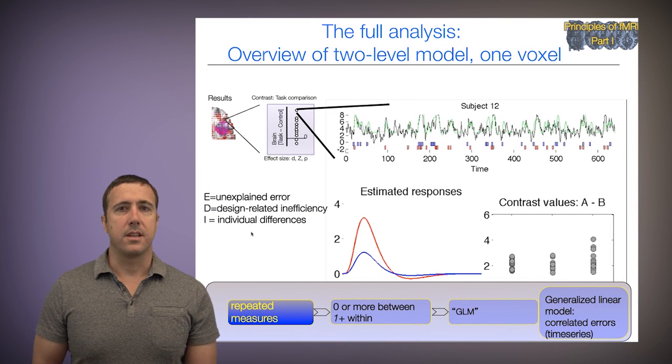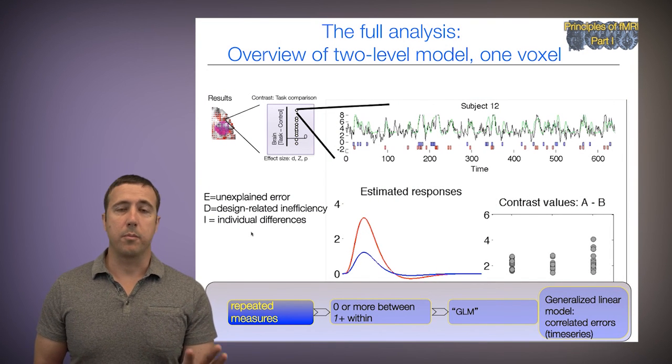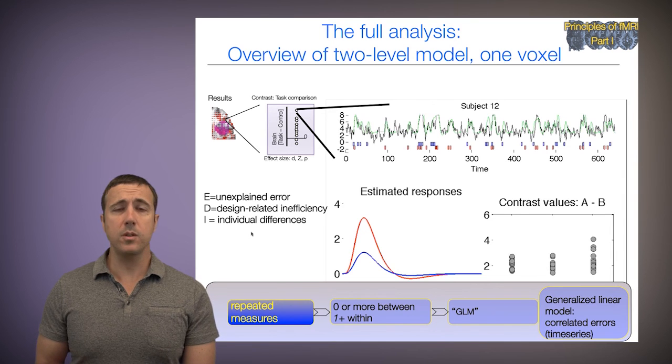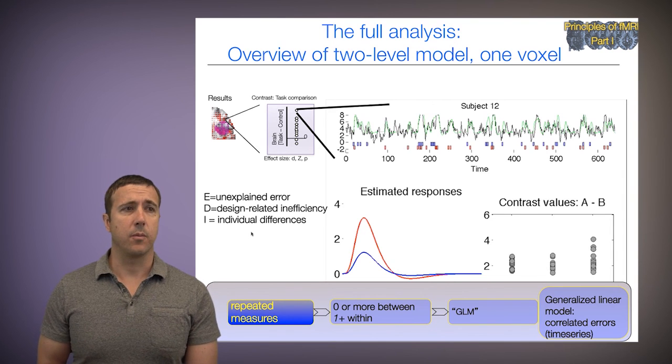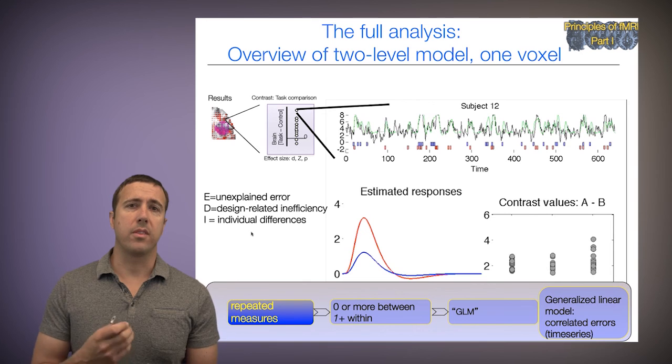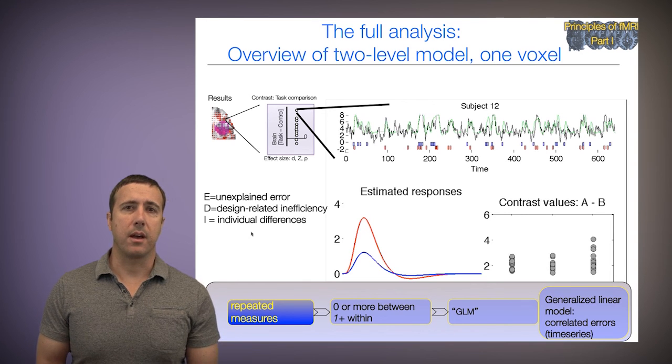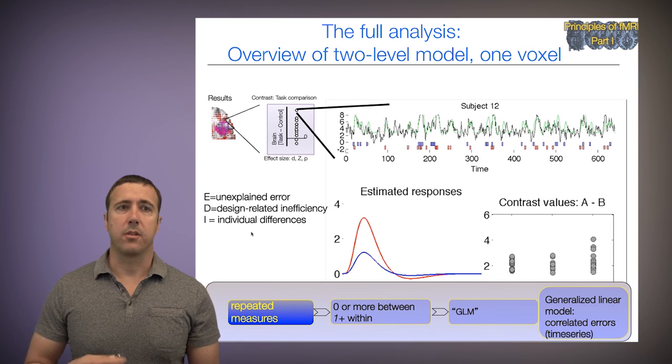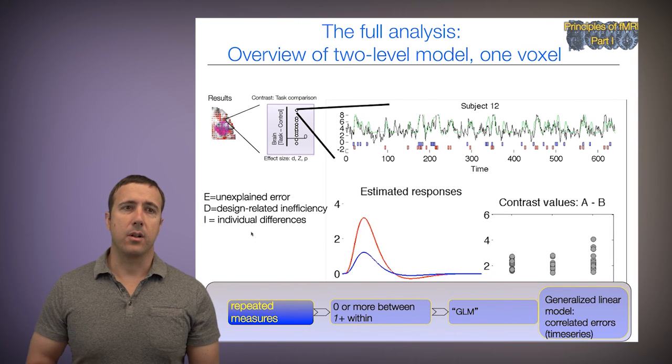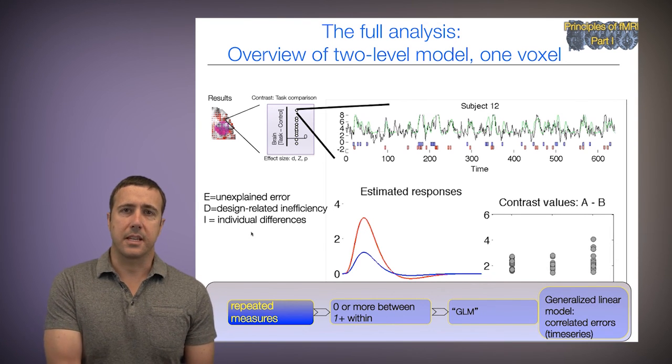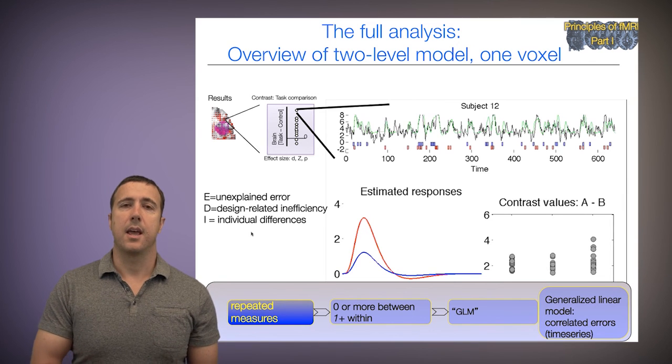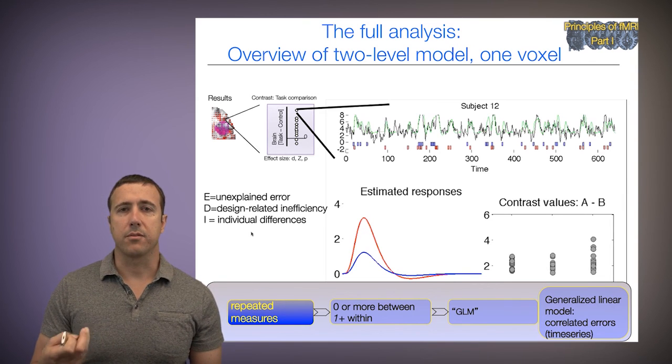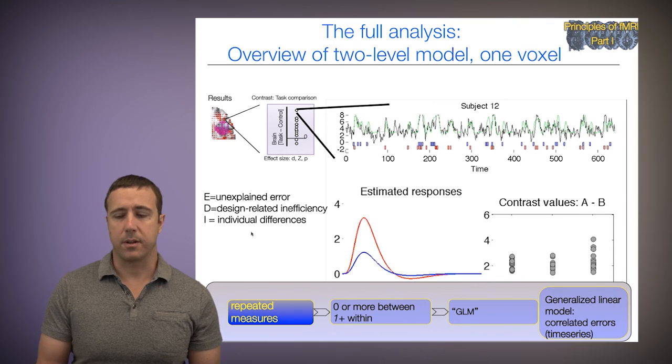This analysis maps onto a repeated measures analysis from traditional statistics, in which we have one or more within-person predictors. We have just one simple within-subject contrast. That's a generalized linear model. We'll deal first with the summary statistic case, which has the one-sample t-test, and we'll deal later with models that account more completely for correlated errors in time-series models.